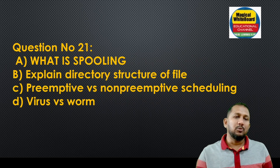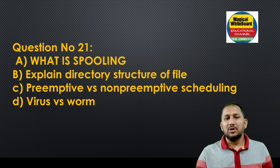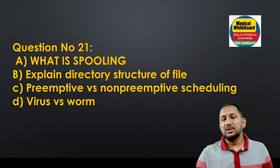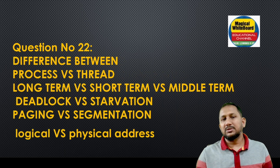Question number twenty-one: what is spooling? Explain direct structure of file. Difference between preemptive and non-preemptive scheduling. Difference between virus and worm.